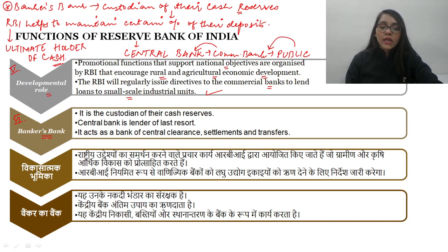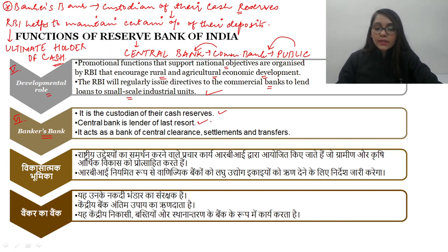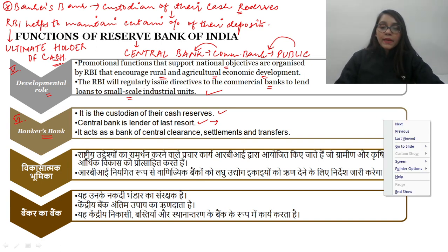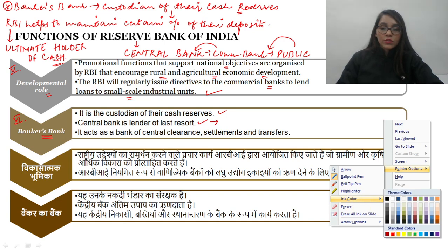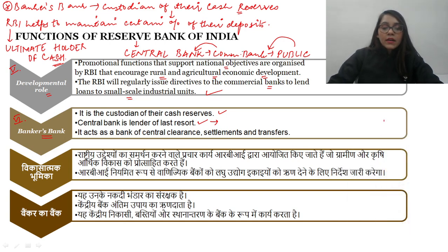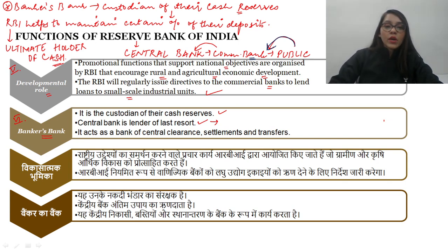The fourth function is Issuer of Currency — the Reserve Bank of India is responsible for providing the public with a sufficient supply of currency notes and coins and also managing their circulation. The fifth function is Developmental Role — RBI must ensure that finance and banking services reach areas that currently lack access, enabling people there to avail credit or make deposits, which increases productive capacity and development.